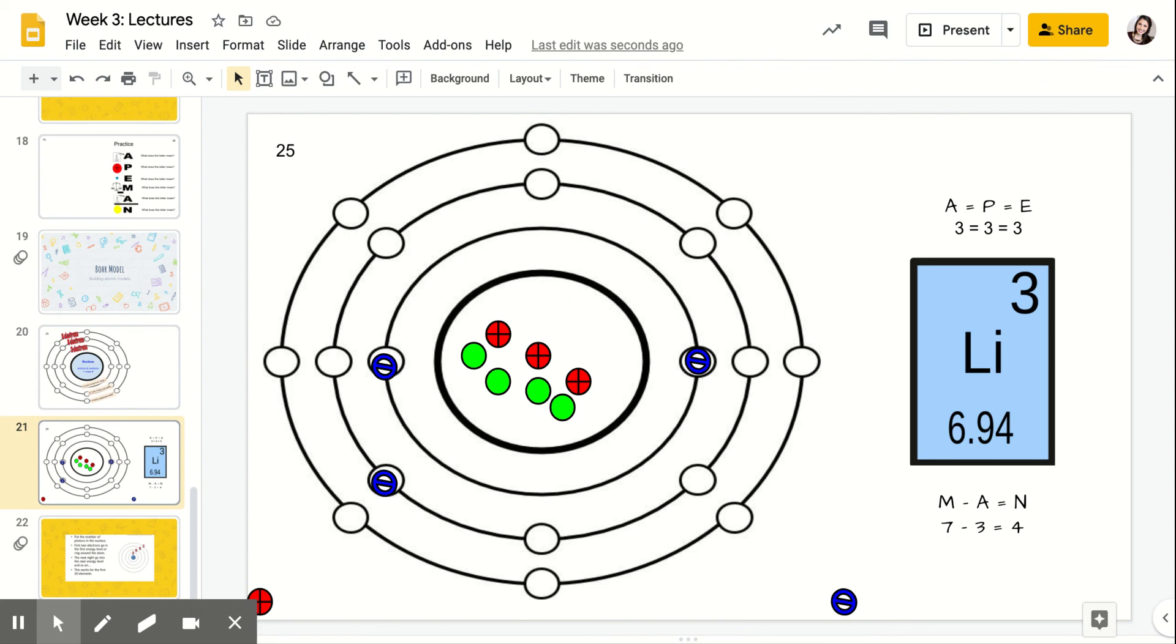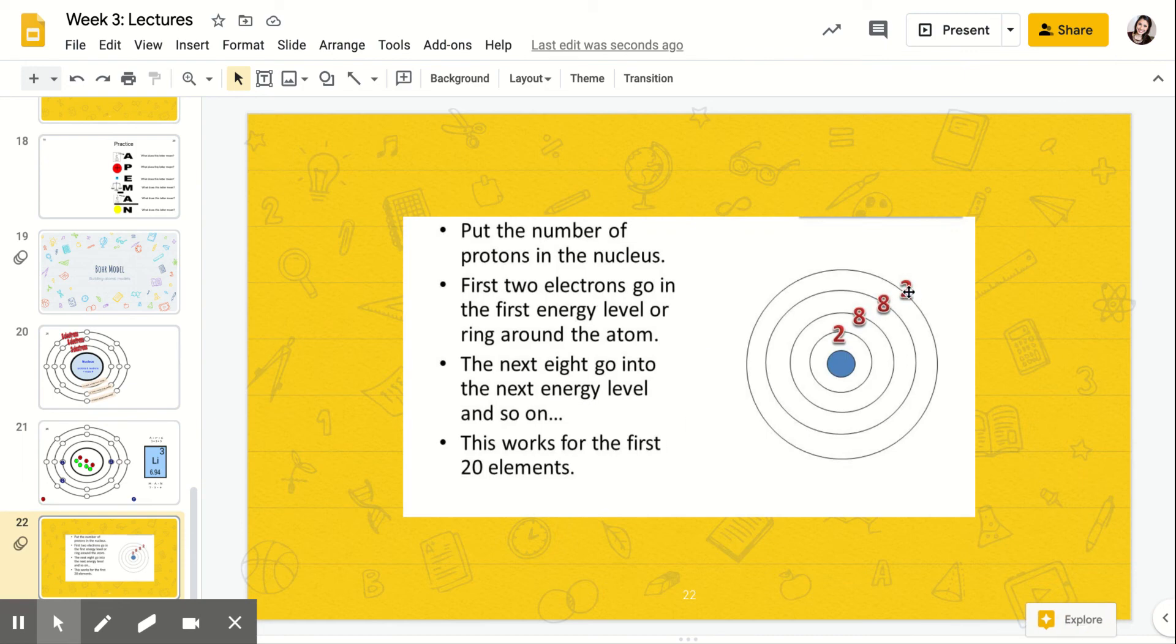So remember, you want to make sure that you put the number of protons and neutrons in the nucleus. And then that first ring can hold up to two and then everything after that is going to hold up to eight. So each energy level or ring, it's going to be two then eight, eight, eight, eight and so forth.